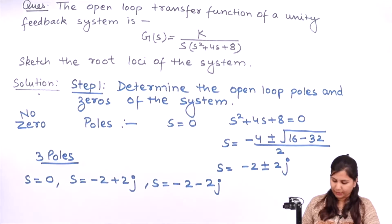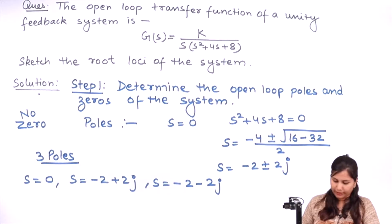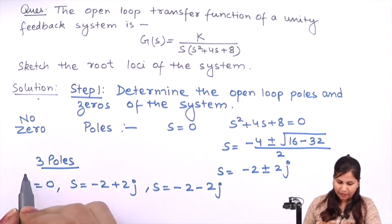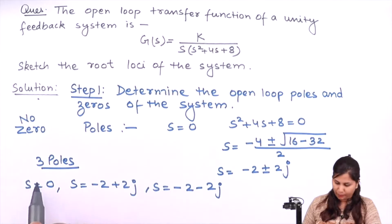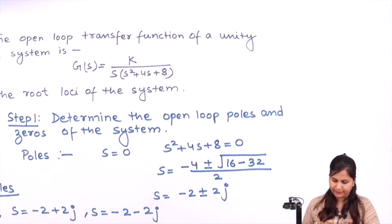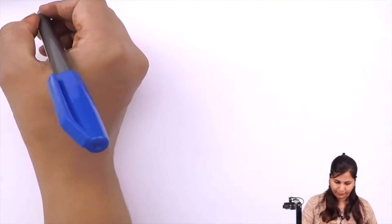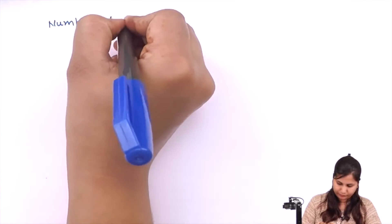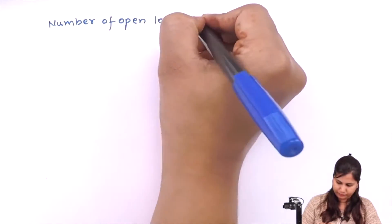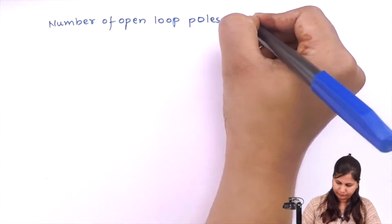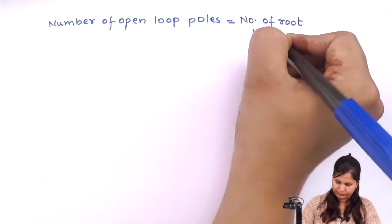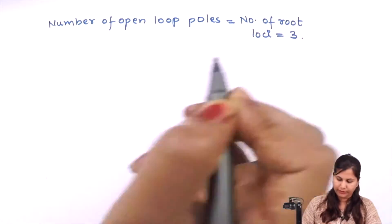The number of poles equals the number of root loci branches. Since there are three poles, there will be three root loci branches.